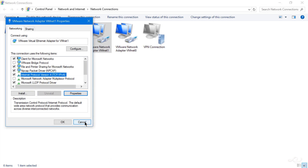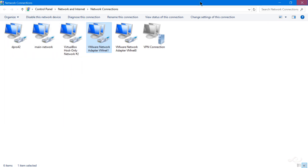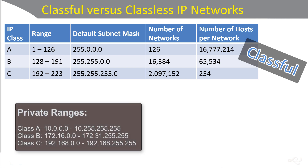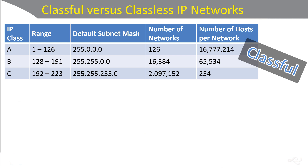This is the way it was for a long time — classful networks using private ranges within those classful networks. But at the beginning of the millennium, there was a big shift over to classless, where you could use any subnet mask for any network number.